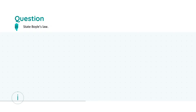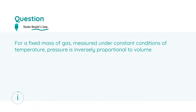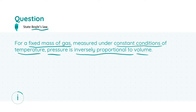In part i we're asked to state Boyle's law, which is just a simple definition. To get full marks you need to include a few key buzz terms. For a fixed mass of gas measured at constant temperature, pressure is inversely proportional to volume. You could also represent this using the formula PV equals some constant, but you need to give a little more explanation alongside it.